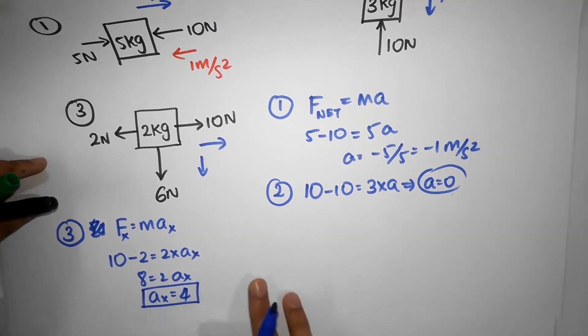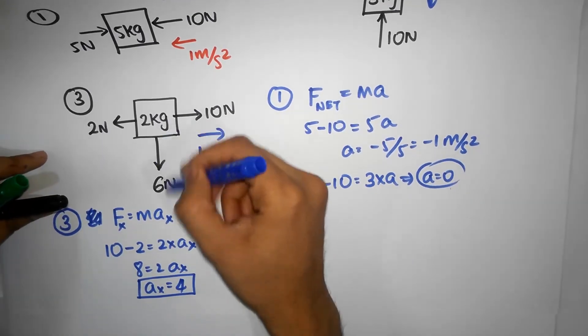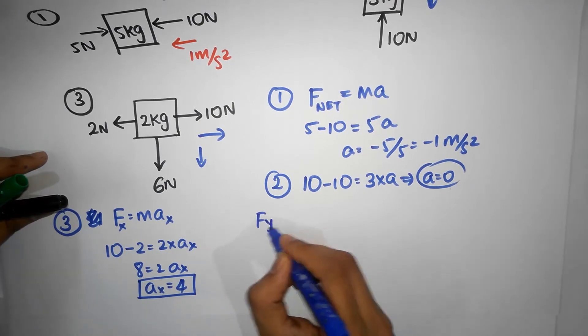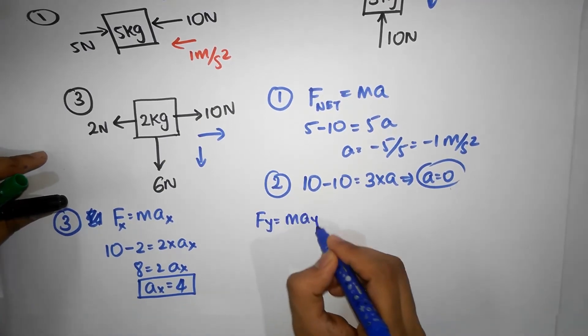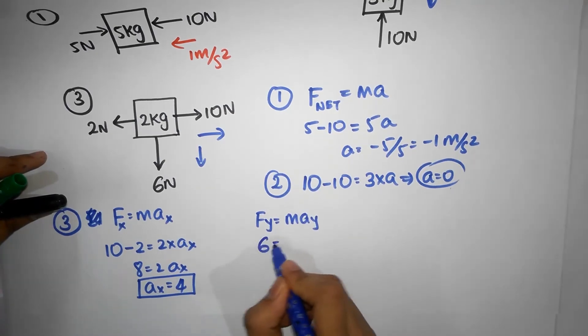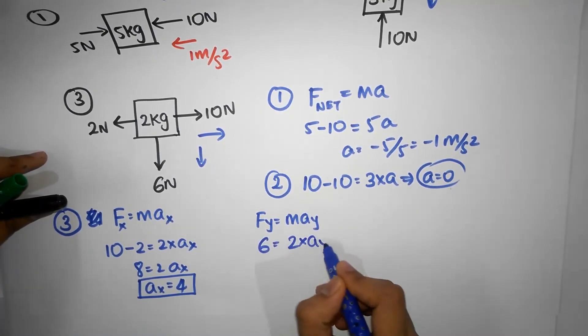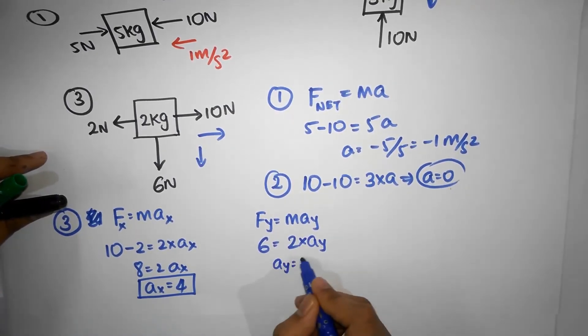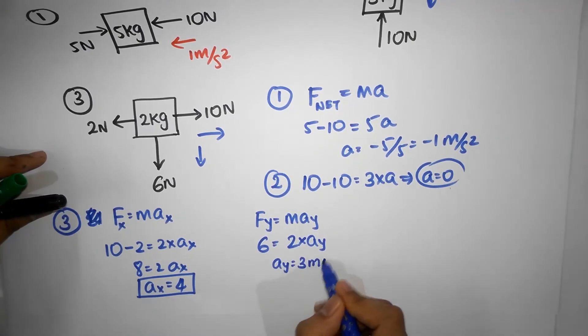That's the acceleration along the x direction. But it will also have acceleration in the y direction. For that, I'm going to use Fy equals May. And there's only one force acting, that's downwards. So, 6 is going to be 2 into Ay. So, Ay is going to be 3 meters per second squared.